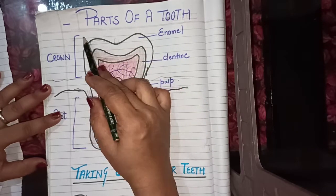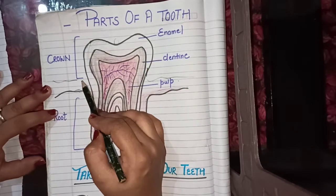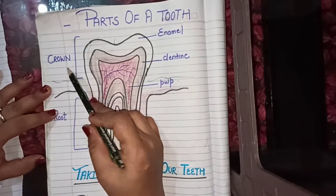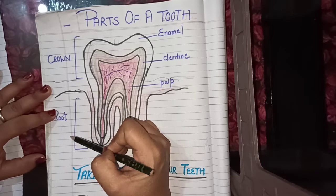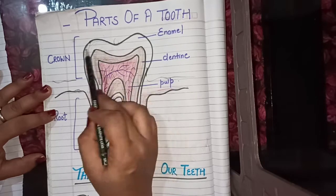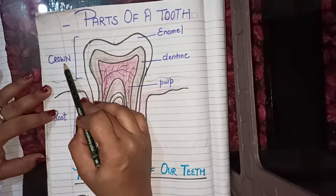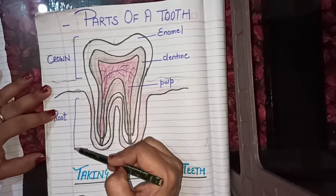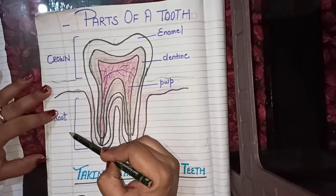Each tooth has two parts: crown and root. This white part is crown and this bottom part is root.